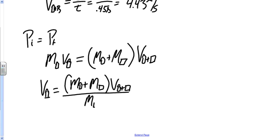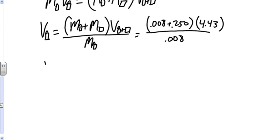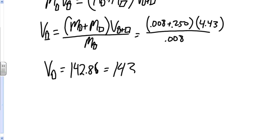The mass of the bullet was given as 8 grams, that's 0.008 kilograms, plus the mass of the block which is 250 grams, or 0.250 kilograms. The velocity of the bullet-block system was 4.43 meters per second, and the mass of the bullet was 0.008 kilograms. Going through and solving, we get the velocity of the bullet before the collision is about 142.86, which rounds to 143 meters per second.